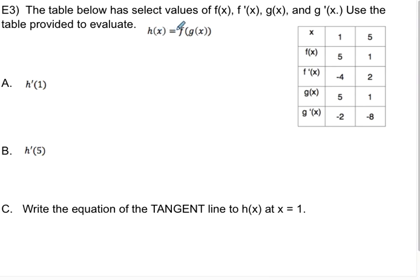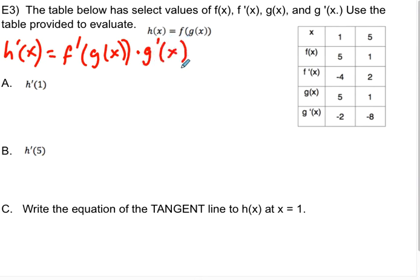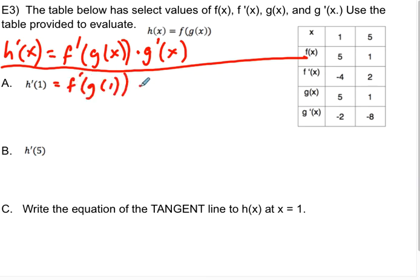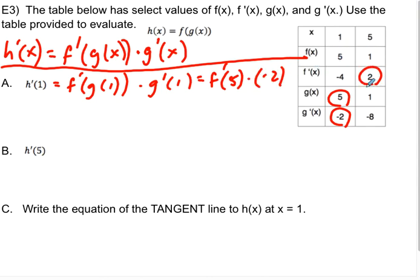For E3, h of x equals f of g of x, which is a chain rule. We're asked to use a table to find values for h prime. The formula is h prime of x equals f prime of g of x times g prime of x. For h prime of 1: g prime of 1 is negative 2, and g of 1 is 5, so this is f prime of 5 times negative 2. f prime of 5 is 2, so the answer is 2 times negative 2 equals negative 4.